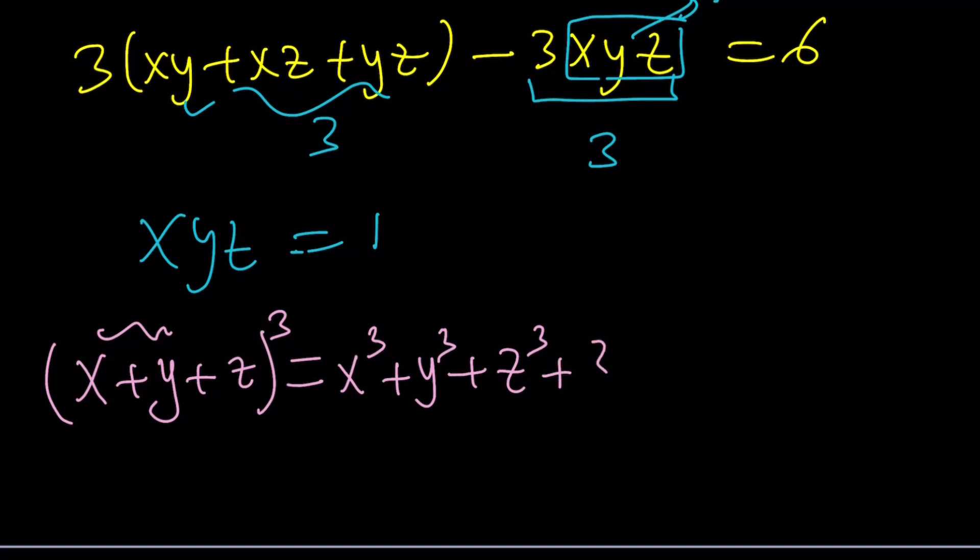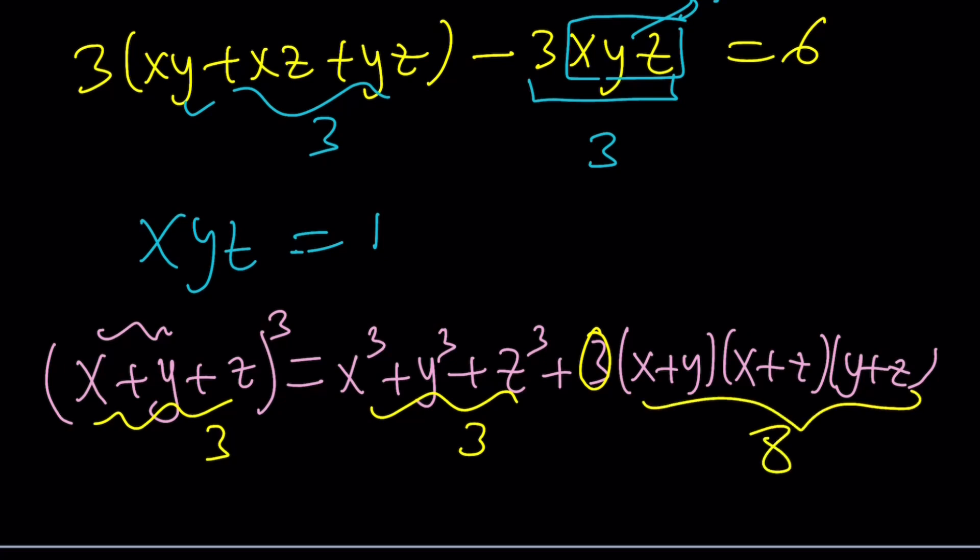This gives us x cubed plus y cubed plus z cubed. And then you get something super interesting: three times the quantity x plus y, x plus z, and y plus z. Now from here we do know a couple things. For example, this is equal to 3. So 3 cubed is 27. This is also 3. 27 minus 3 is equal to 24. Divide 24 by 3, you get 8. So that stuff is supposed to equal 8. But does this help? No, I don't think so. It just verifies the previous identities. So I think here is the best approach.